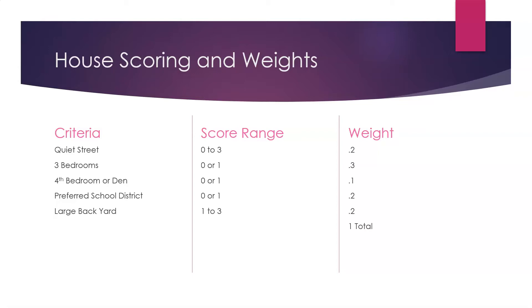The preferred school district was again yes or no, zero or one, and it's pretty important, so we gave it a weight of 0.2. The large backyard had differences — a monster big backyard gets a three, a moderate sized backyard gets a one — and the importance of that got a weight of 0.2. If you added up all those weights, you'd have a total of one.